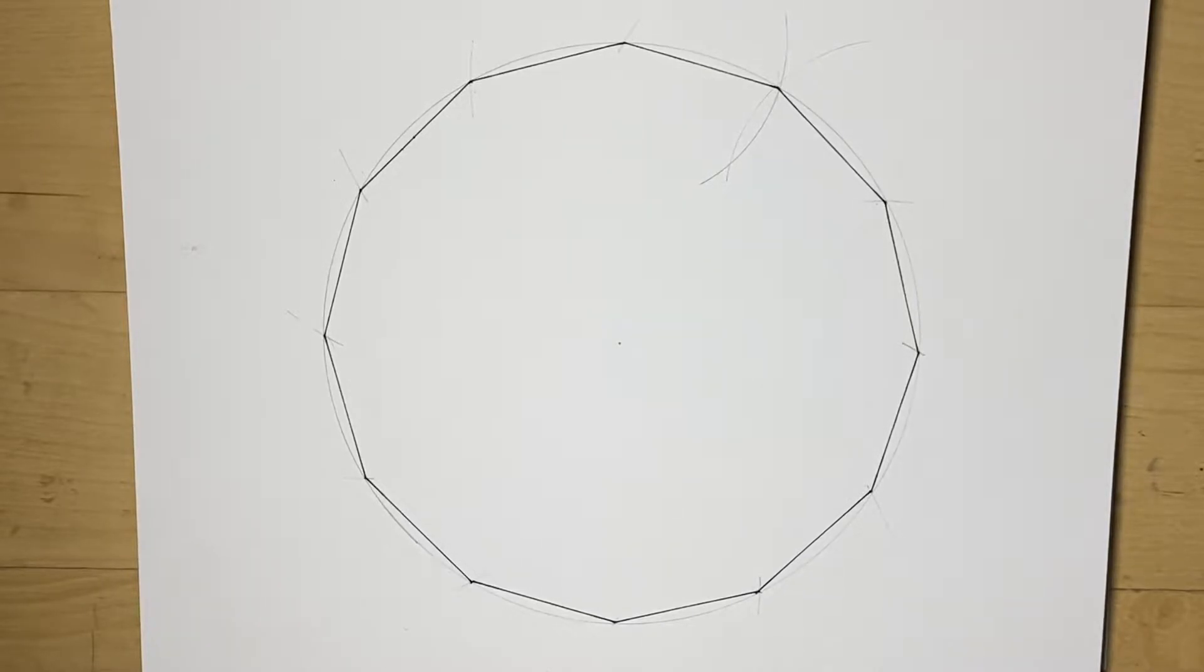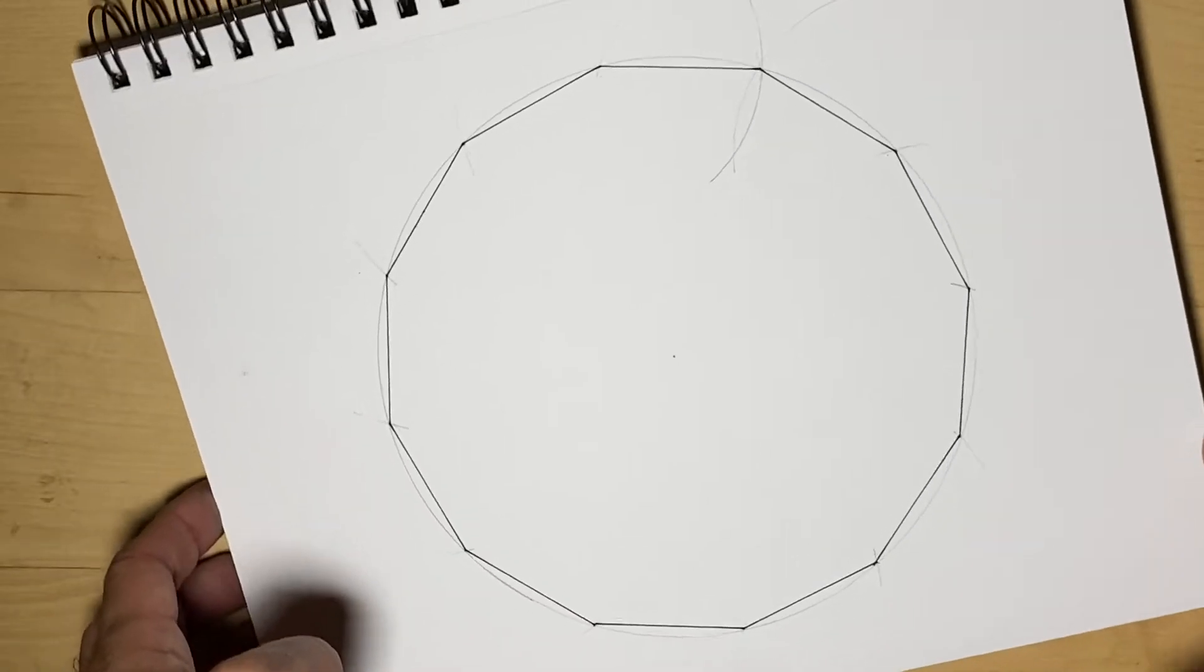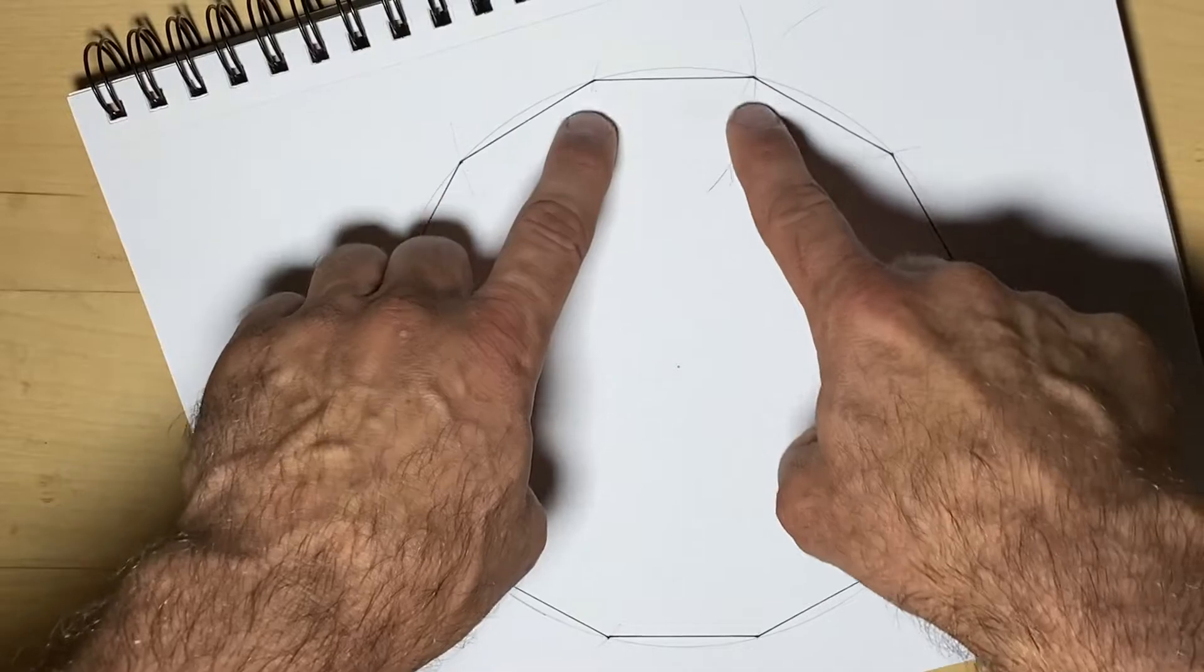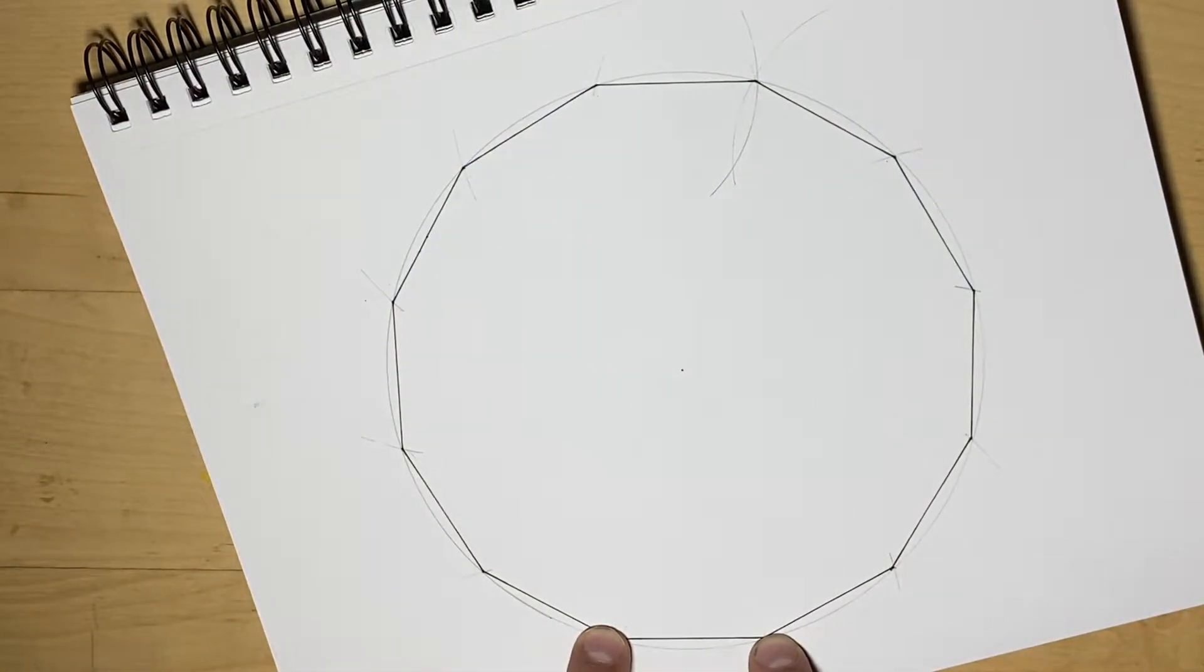So now that we understand how to make a 12-sided shape or a dodecagon, we can make a dodecagram, which is going to be a 12-sided star. That's a little bit different than the other 12-sided star that I made. So the way we're going to do that, we're going to rotate our paper just slightly so that this flat part is facing on top. And we're going to connect these two lines down here and make them parallel. And we're going to keep rotating our paper and doing that same procedure.